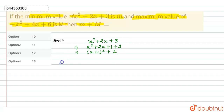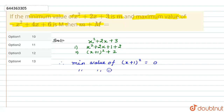Now we know that x squared plus 2x plus 1 equals (x plus 1) whole squared, so the expression becomes (x plus 1) whole squared plus 2. The minimum value occurs when (x plus 1) whole squared equals 0, giving a minimum value of 0 plus 2, which is 2. So the minimum value, small m, equals 2.